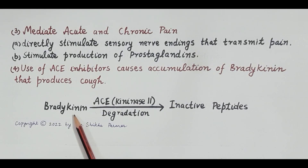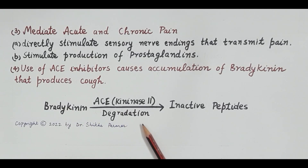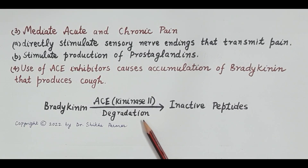Accumulation of bradykinin caused by ACE inhibitors like captopril and enalapril can cause dry cough and can also produce angioedema. So this is in brief on how kinins produce inflammation and angioedema. If you find the video useful, kindly like, subscribe, and share. Thanks for watching.